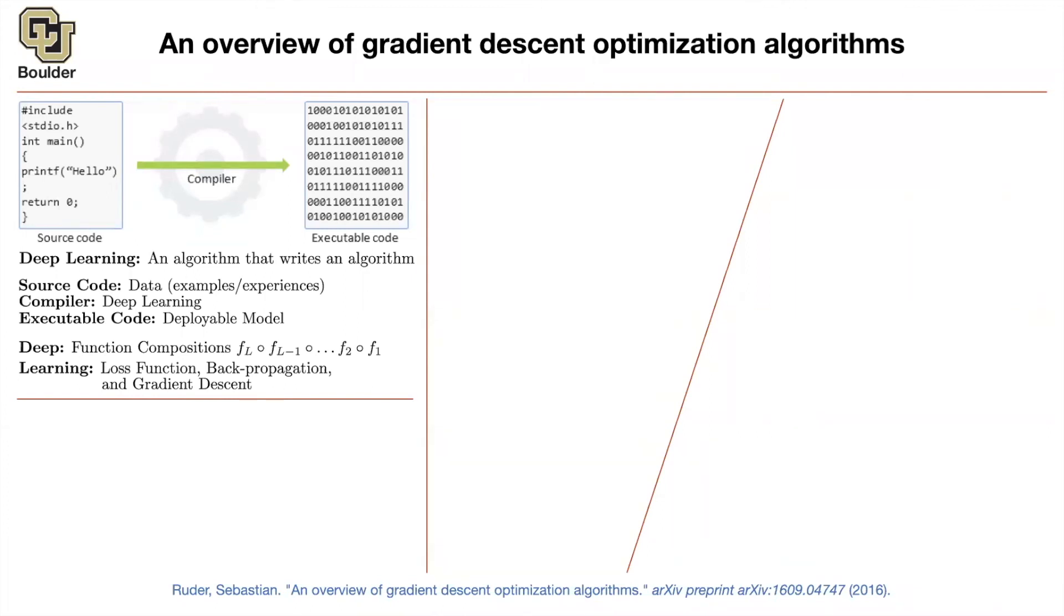But whenever you end up with an executable code, you cannot just take it and put it into production because then your customers are going to be really unhappy if your algorithm makes mistakes and you're going to lose customers. That's why you have some test data. You first test your algorithm and make sure it is working correctly. This test data, you don't see it when you are doing the training. The algorithm doesn't see it. But once you are happy with your algorithm, it's doing a good job on your test data, it's ready to be put into production. So first, you need to test your algorithms. Make sure there are no bugs or anything.